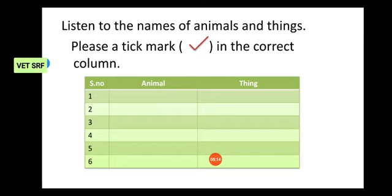Now, listen carefully. Number one, Box. Box. Number two, Cat. Cat. Number three, Mango. Mango. Number four, Book. Book. Number five, Rat. Rat. Number six, Elephant. Elephant.